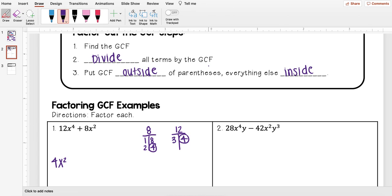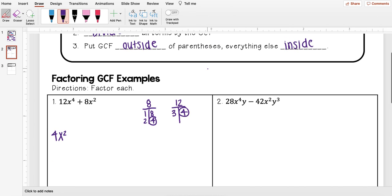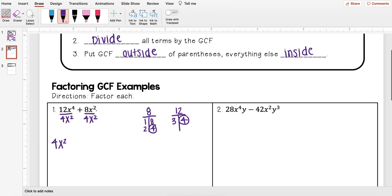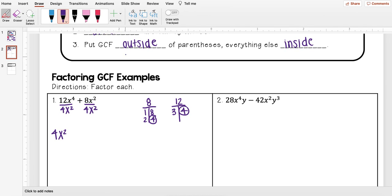Second step is I want to divide all terms by the GCF. So I'm going to divide 12x to the fourth by 4x squared and 8x squared.